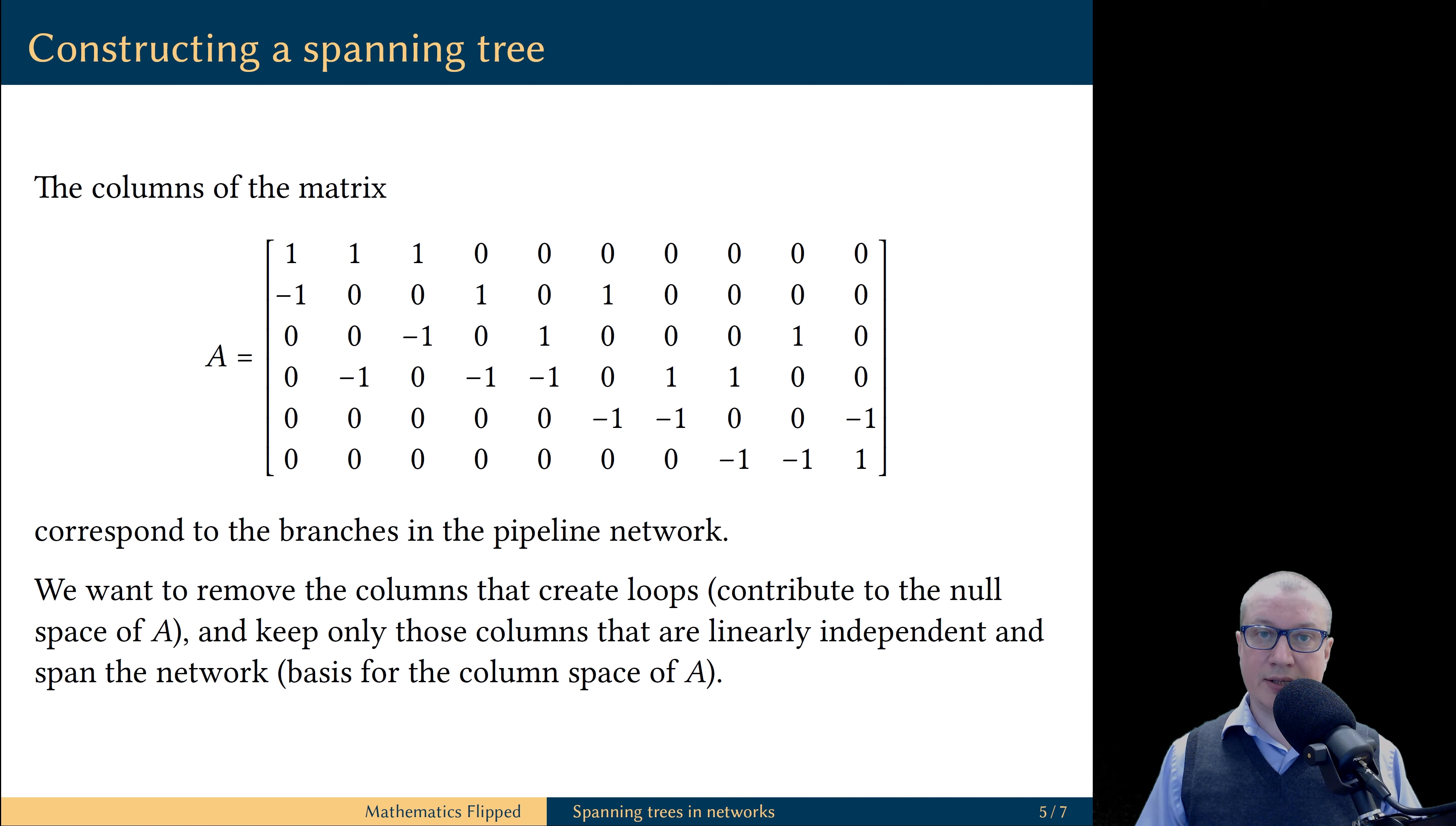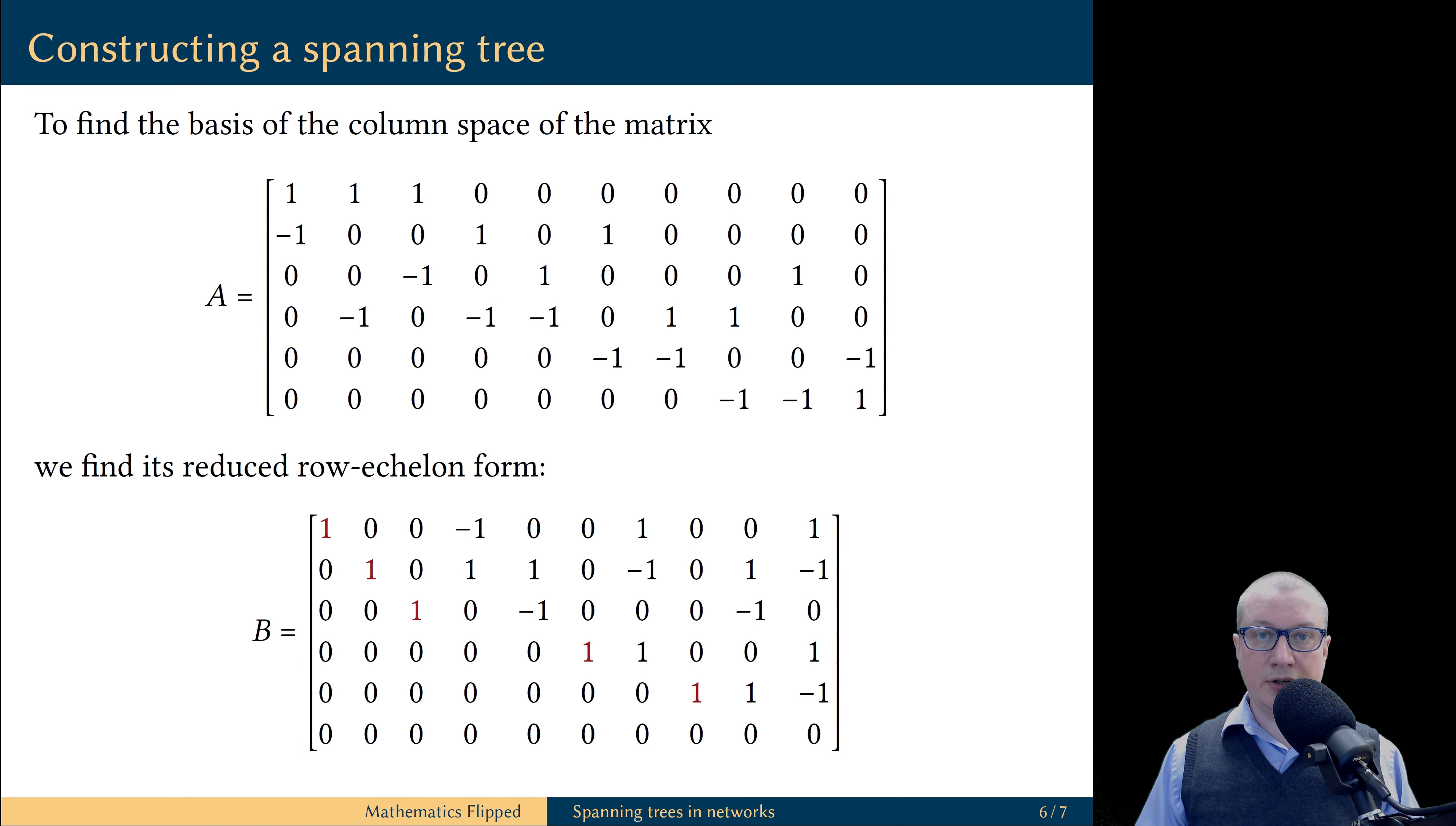But a linearly independent spanning set for the column space of the matrix A is a basis for the column space. And in this video, we already figured out how to find the basis of the column space of any matrix. All we need to do is to find the reduced row echelon form of this matrix.